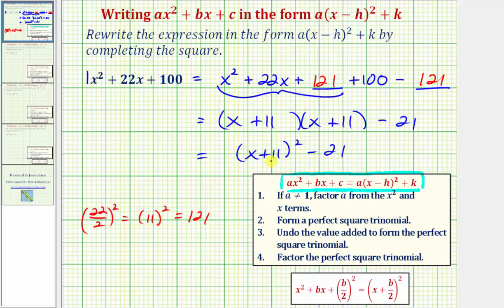Now we have the expression in the form requested which is the form a times the quantity x minus h squared plus k. Notice a would be one. Notice how h would actually be negative 11. And then k would be negative 21. This will be important when we use this form to graph quadratic equations.